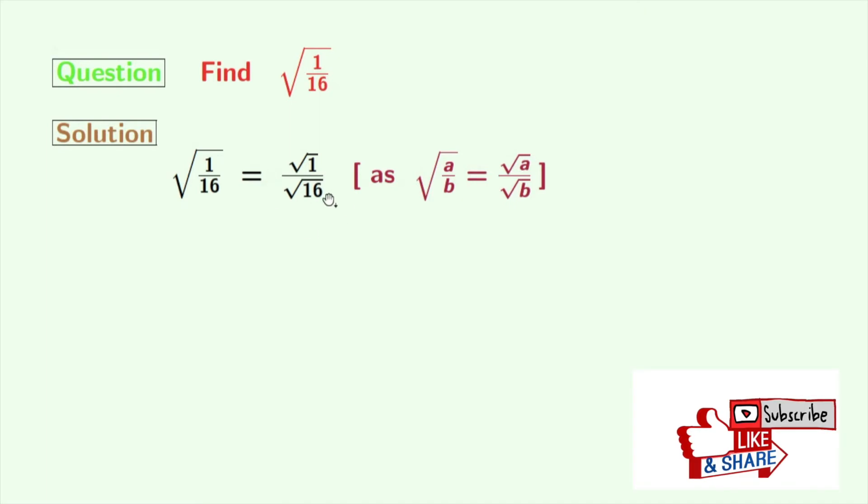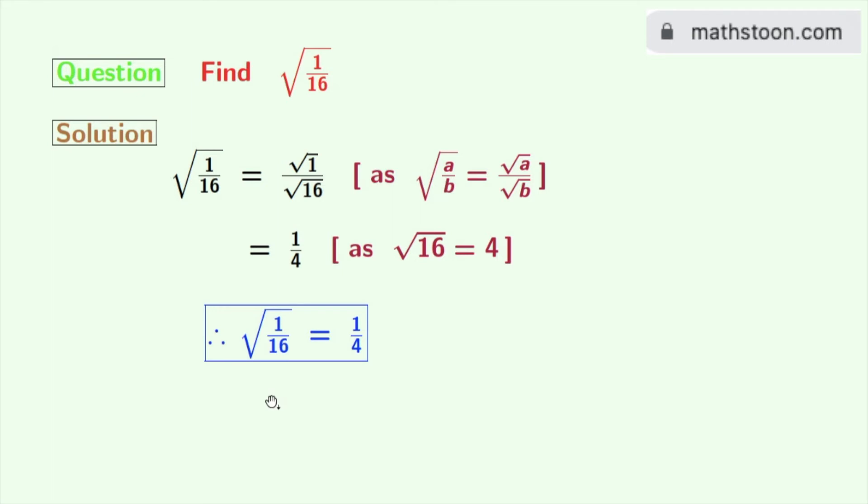As we know that root over 1 is 1 and root over 16 is 4, so we get 1 by 4. So finally we get the value of square root of 1 by 16, which is 1 by 4, and this is our final answer.